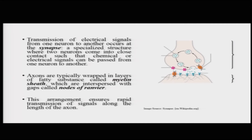The transmission of electrical signals from one neuron to the other happens at a particular site called the synapse. The synapse is a specialized structure, a specialized place where two neurons come close enough to each other such that any kind of chemical or electrical signals can be passed to and fro. Typically, the neuron passing the signal is referred to as the pre-synaptic neuron, and the one receiving the signal is called the post-synaptic neuron.